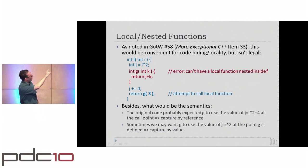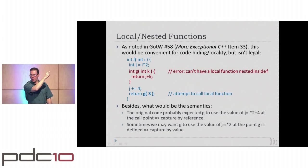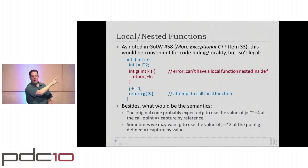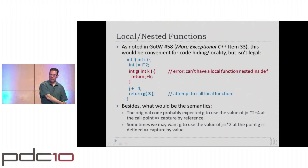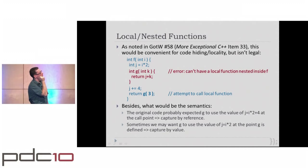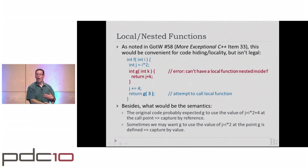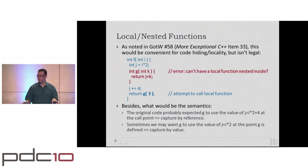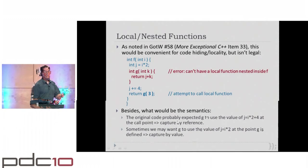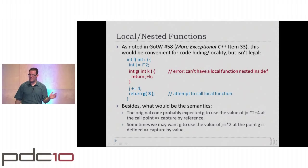At the return line I want to return the value of g invoked with 3. But I also have to decide: do I want the value of j as it was when I created the lambda, in which case the value would be i times 2? Or do I want the value of j at the time I invoke the lambda at the return statement, in which case it would have 4 added to it? Capture-by-value gives you the snapshot; capture-by-reference gives you the live value.